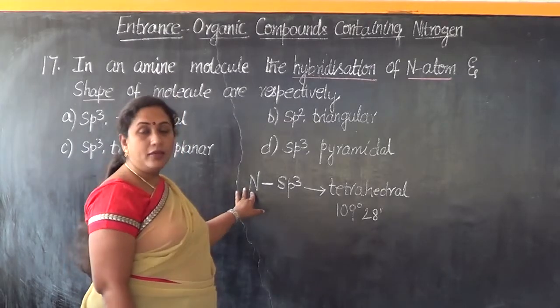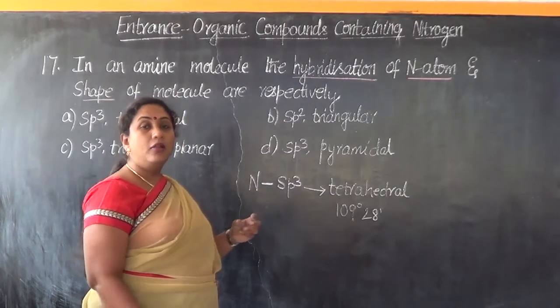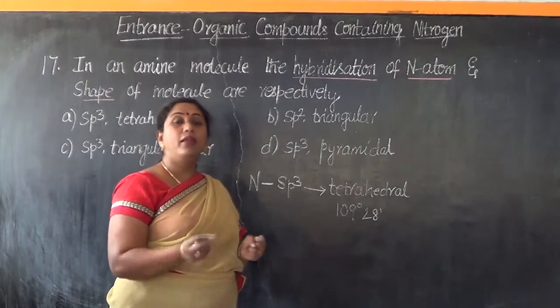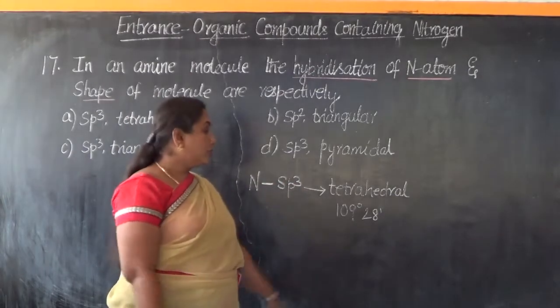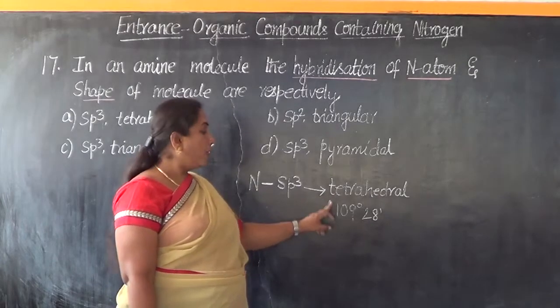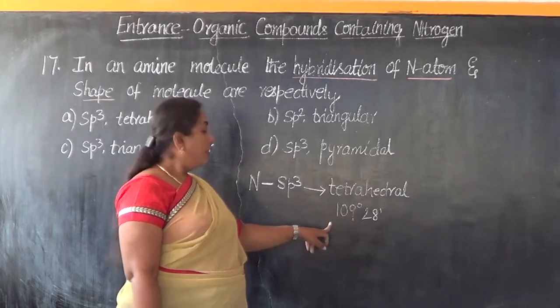So as per that theory, we see that the lone pair of electrons and the bonded pair of electrons repel each other. As a result, they will not be maintaining a tetrahedral shape or this particular bond angle.